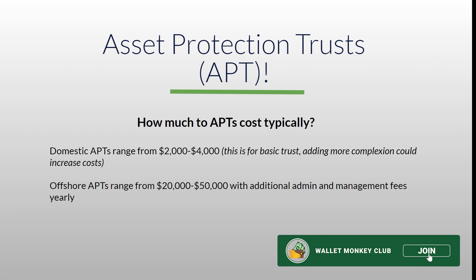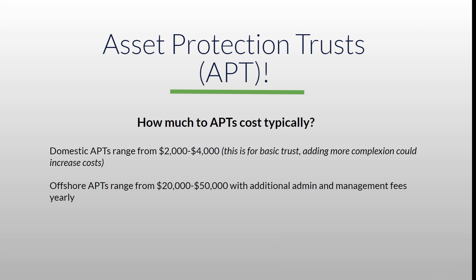How much do APTs cost? For a domestic APT, you're ranging somewhere between two and four thousand dollars for a basic trust; adding complexity will obviously increase costs. There may also be a yearly management fee depending on your structure with your business advisor. On the offshore side, your range is probably somewhere between twenty and fifty thousand dollars, and there will definitely be additional yearly admin and management fees.